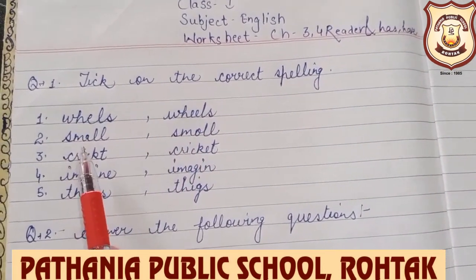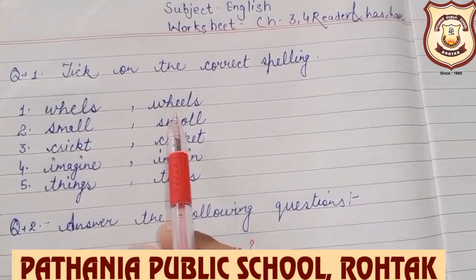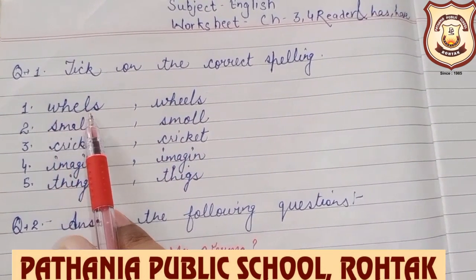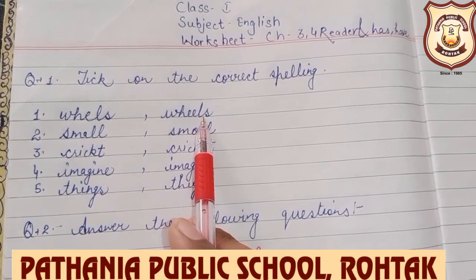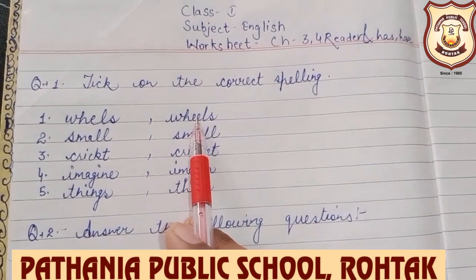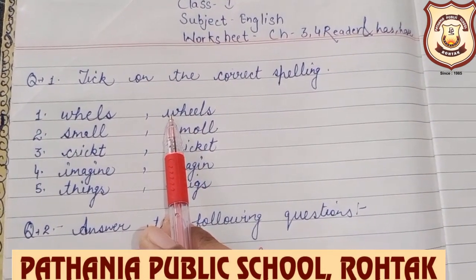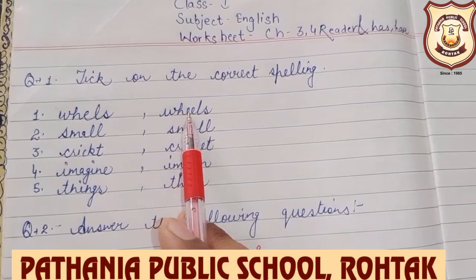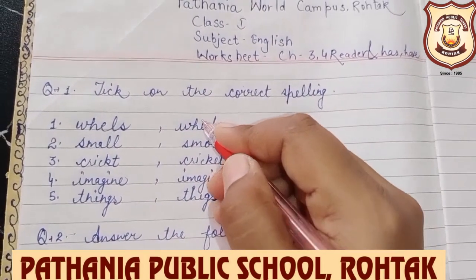You have to see which is the correct spelling. Just see — wheels or wheels. Which is the correct spelling? Double E. So, the right spelling is W-H-E-E-L-S, wheels.